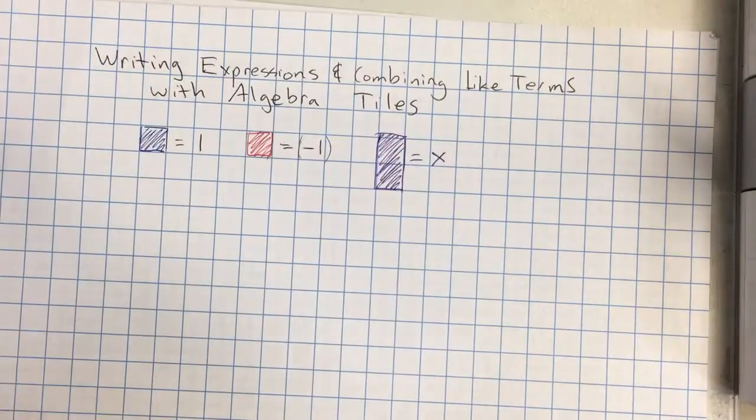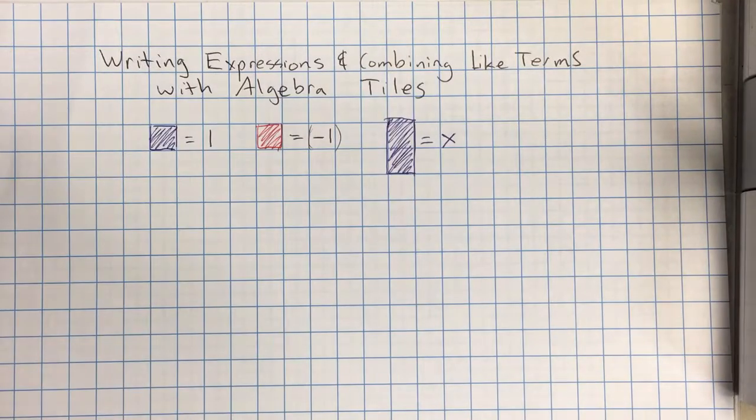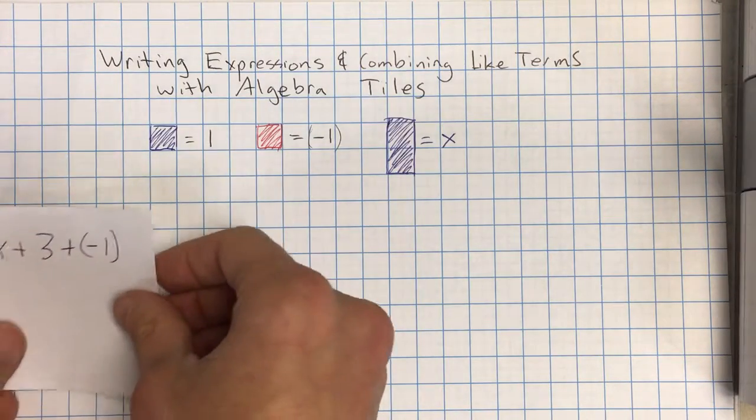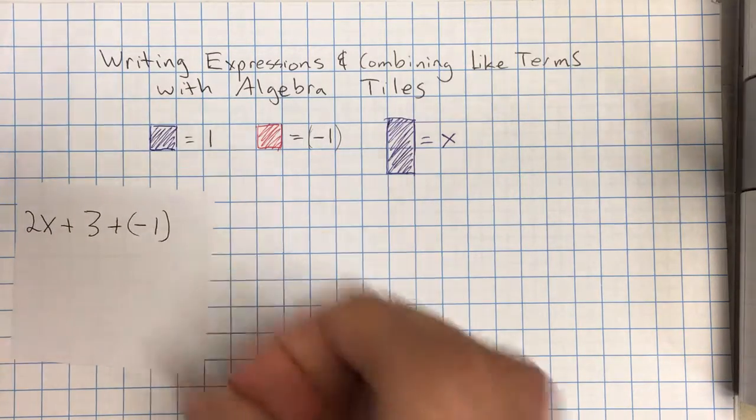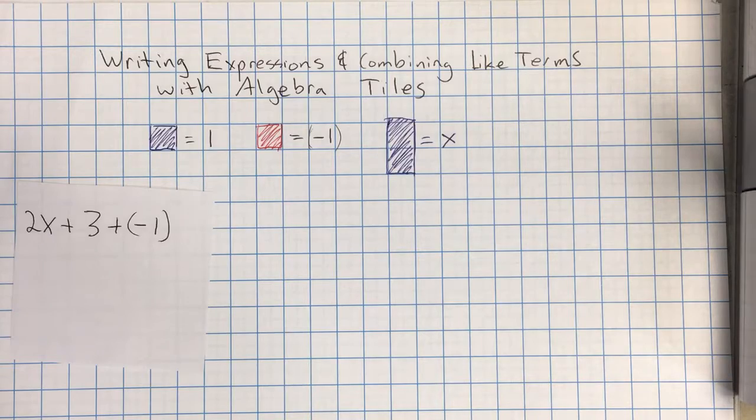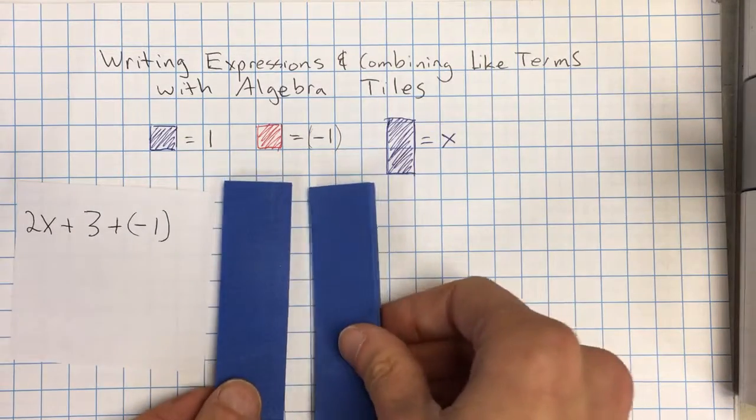We could also get to some other expressions. Let's do this one right here. So if we had 2x plus 3 plus negative 1, we're going to take 2 x's. Okay, just like this.